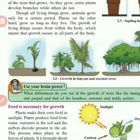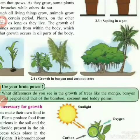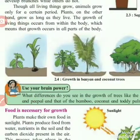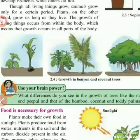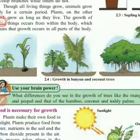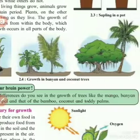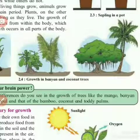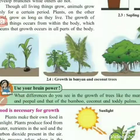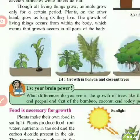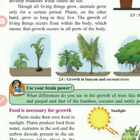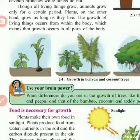Use your brain power: what differences do you see in the growth of trees like mango, banyan, and peepal compared to bamboo, coconut, and toddy plants? There is a difference in how they grow depending on the environment. The next important point is that food is necessary for growth — every living thing requires food to grow.